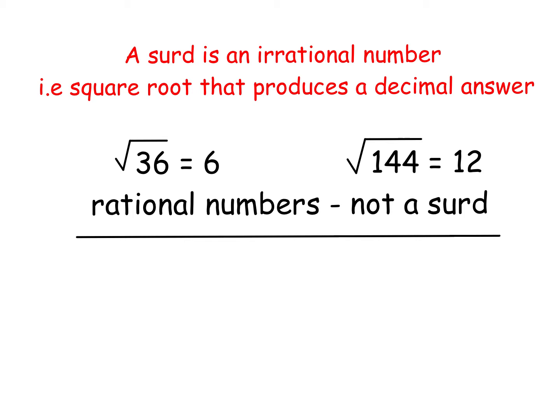The definition of a surd is it's an irrational number. For example, a square root that produces a decimal answer.